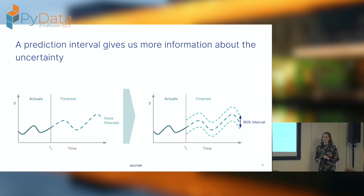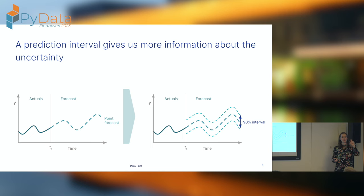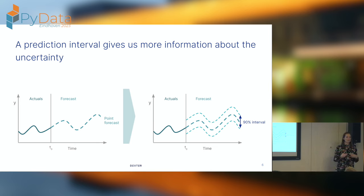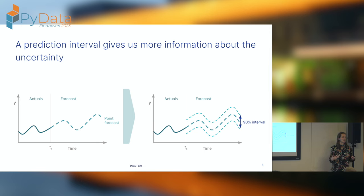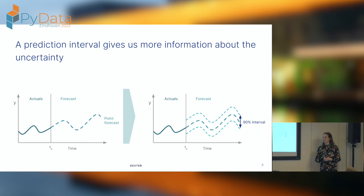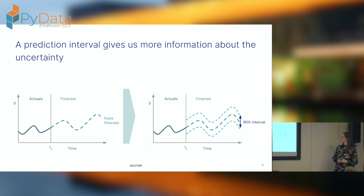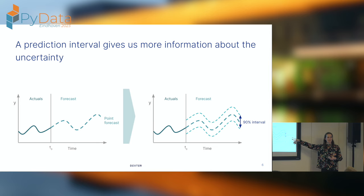One method to add information about uncertainty is to add a prediction interval. Instead of having one point, you add two more points to give a range of certainty. Here on the slide I give an example of a 90% interval, meaning I expect 90% of the values to be within this range. That indicates certainty: if it's very narrow, I'm very certain; if it's very wide, I'm very uncertain. And I want to know that 90% of values actually fall within this interval.